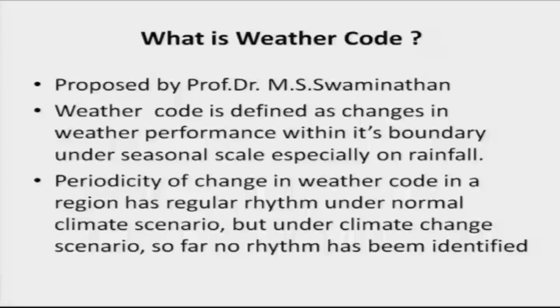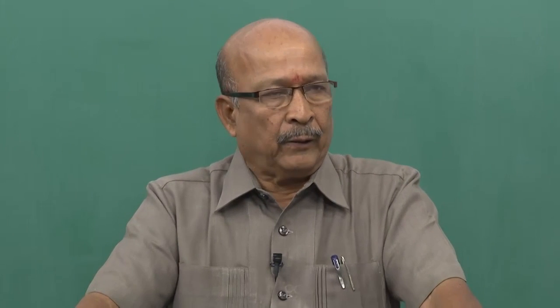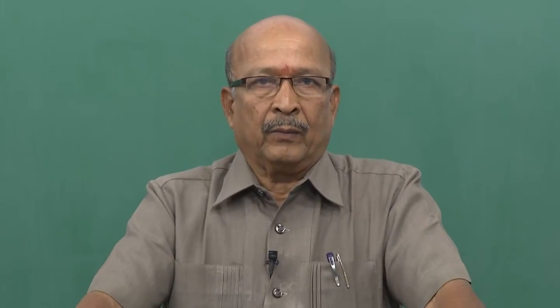The periodicity of change in weather code in a region has a regular rhythm — once in 4 years, once in 3 years, once in 2 years — under a normal climate scenario. But if you anticipate the same rhythm during the climate change scenario, it is not well studied. Whether the rhythm is going to continue or discontinue, we do not know. Studies are going on.